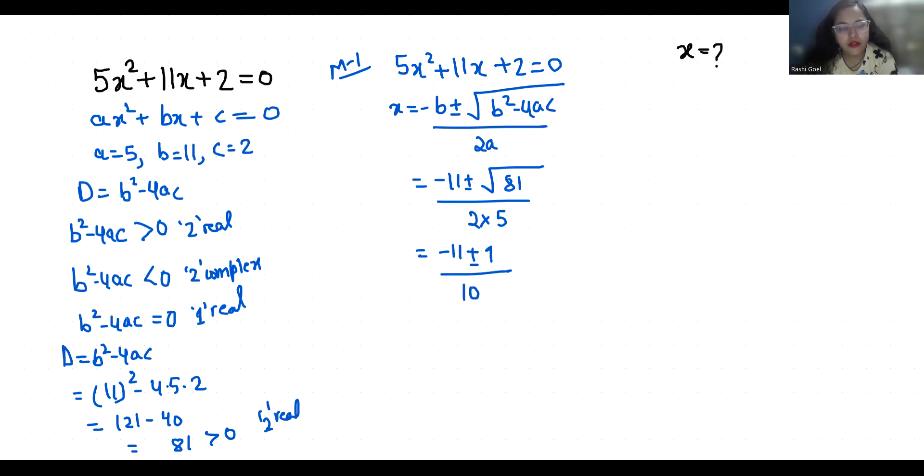So x₁ = (-11 + 9) / 10 and x₂ = (-11 - 9) / 10. x₁ = -2/10 = -1/5, and x₂ = -20/10 = -2. These are the two roots.